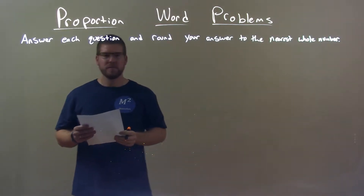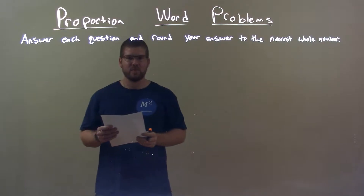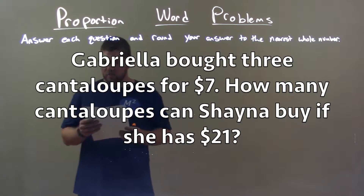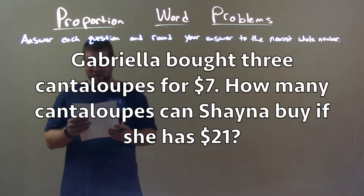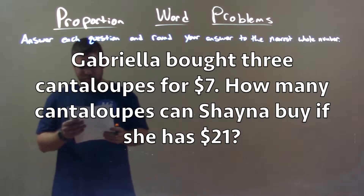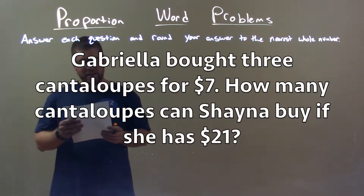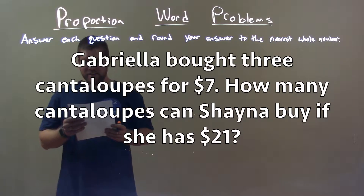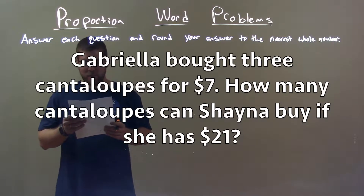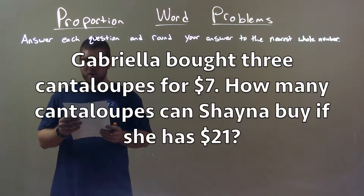If I was given this problem: Gabriella bought three cantaloupes for $7. How many cantaloupes can Shachana buy if she has $21?